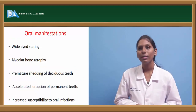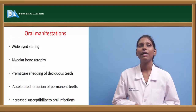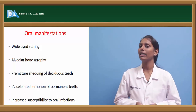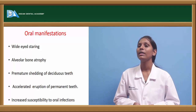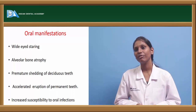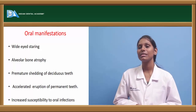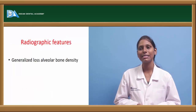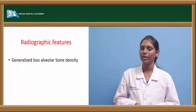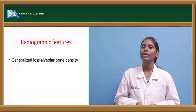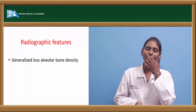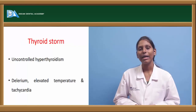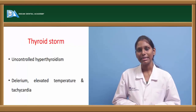Oral manifestations of hyperthyroidism include wide-eyed staring, alveolar bone atrophy, premature shedding of deciduous teeth, accelerated eruption of permanent teeth, and increased susceptibility to oral infections. Radiographically, there is generalized loss of alveolar bone density.